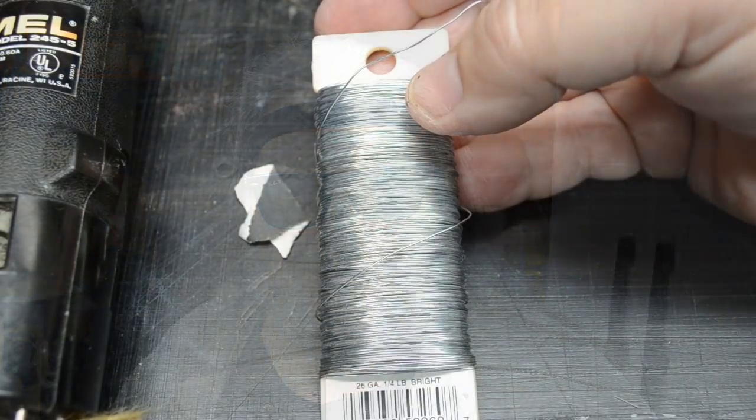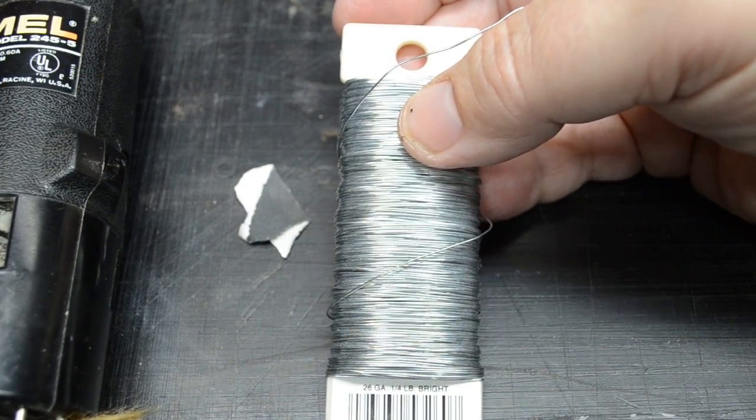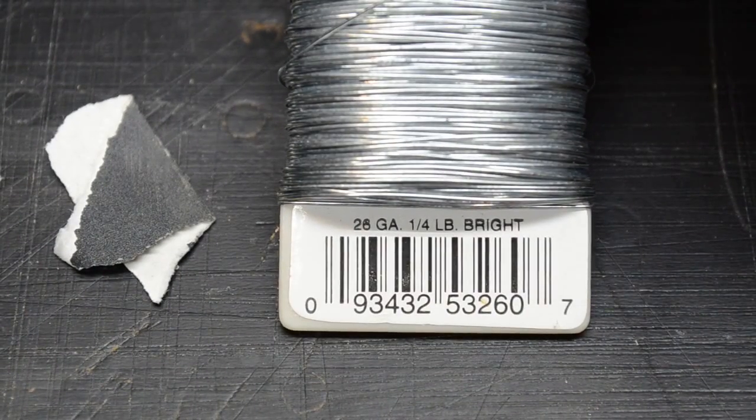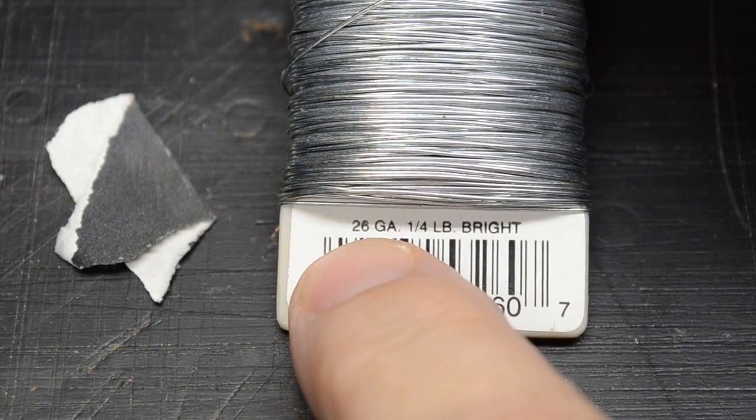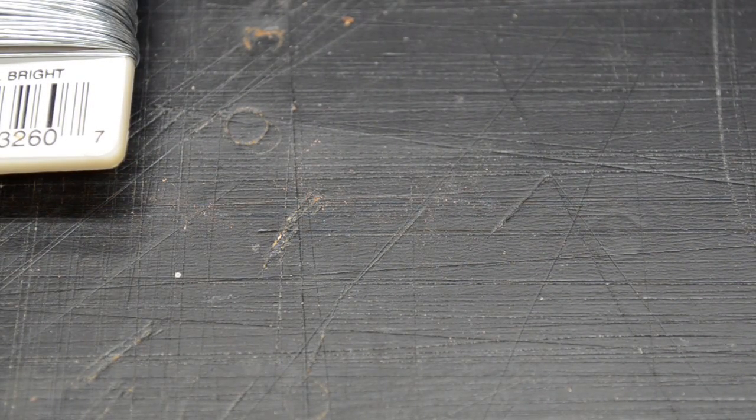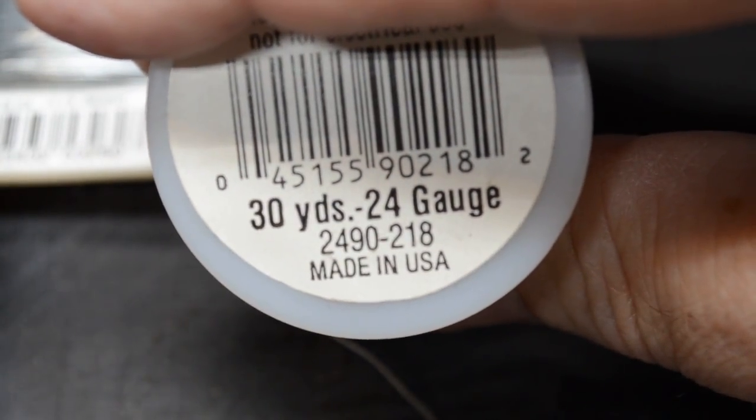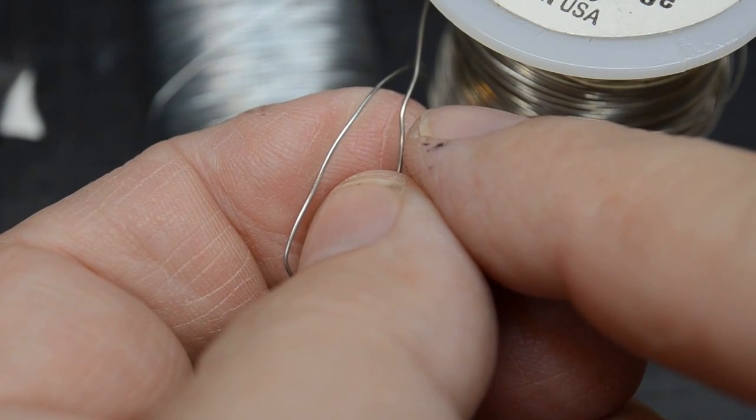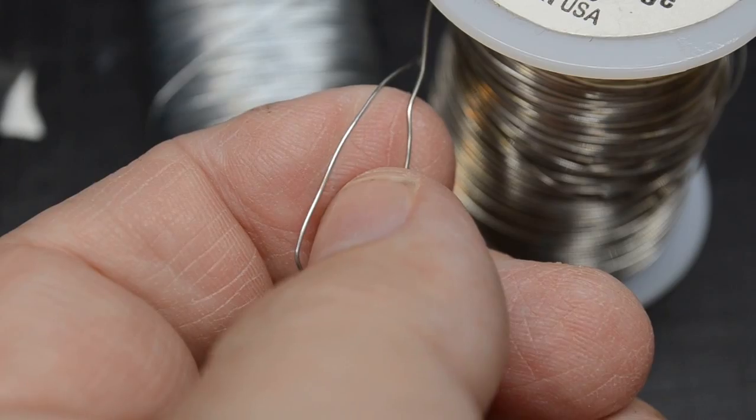The first set of photos that I did I used this 26 gauge wire here. As you can see, this is very thin wire. Now a little hint about the size of wires: the larger the number here, the thinner the wire. So this is 26 gauge. A smaller gauge wire would be 30 gauge. I don't have 30 gauge wire here, at least I haven't found any. What I've got here is a roll of 24 gauge wire. The 24 gauge is just a little bit bigger than the 26.